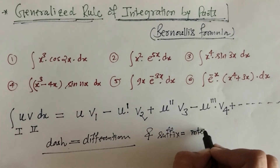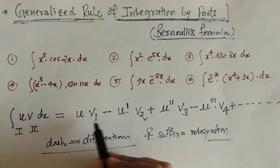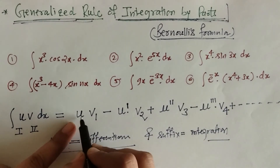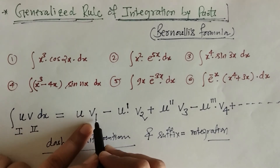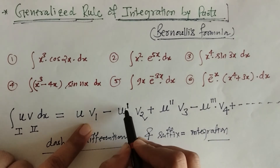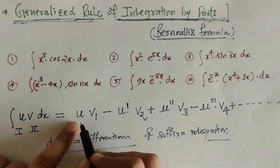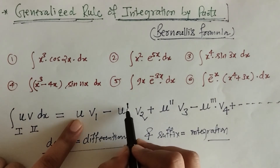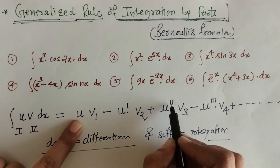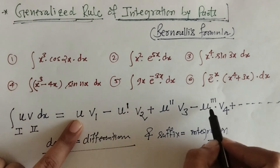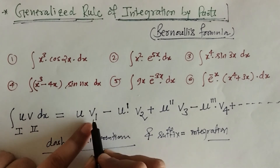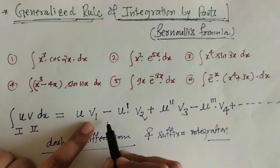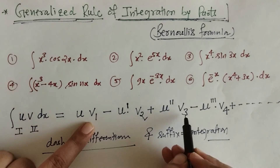So again we can see here: we have the first function as it is, then the second function's integration. In the second term we have u' (u dash); in the third term we have u'', u''' (u double dash, u triple dash), and so on — these are the successive derivatives of the first function. And here we have v₁, v₂, v₃, v₄ — these are the first integration, second integration, third integration, and so on.